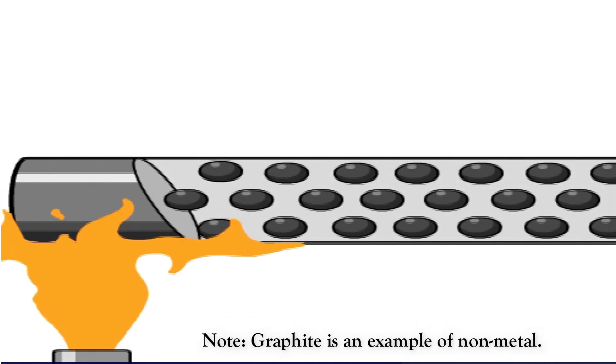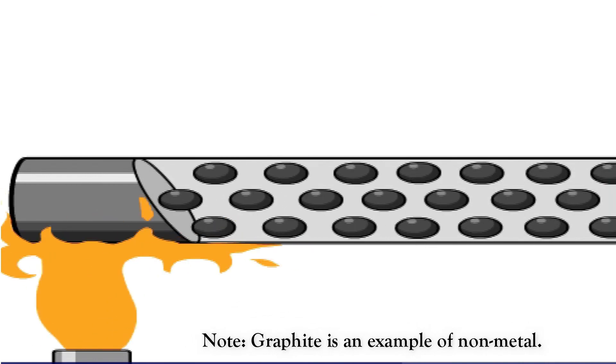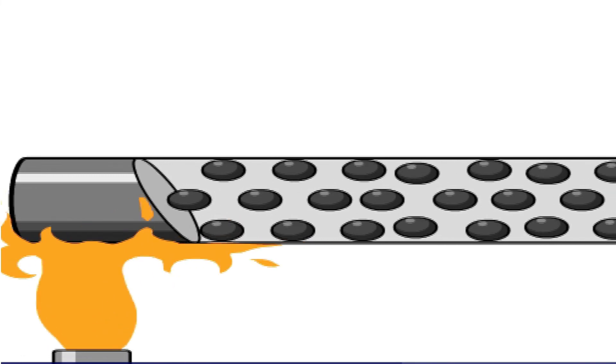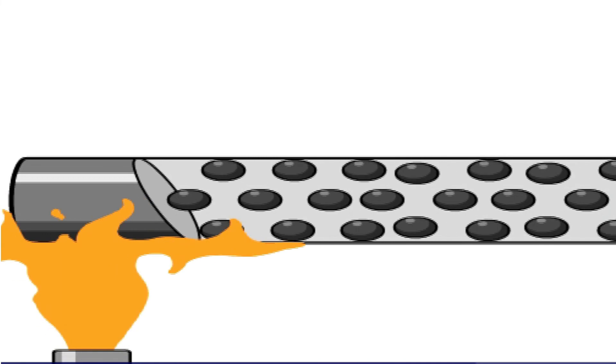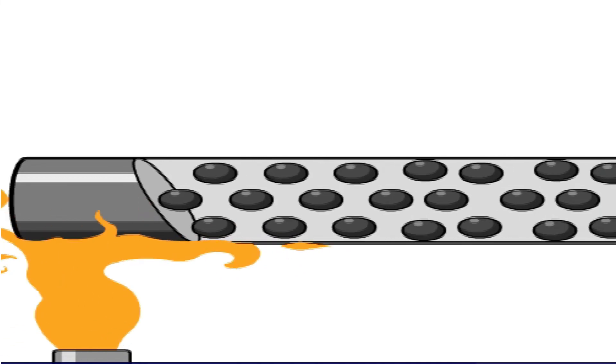As the graphite rod is heated, the carbon near the heat source begins to vibrate. The vibrations make adjacent atoms vibrate and so on along the rod. This is how heat is transferred along a non-metal.